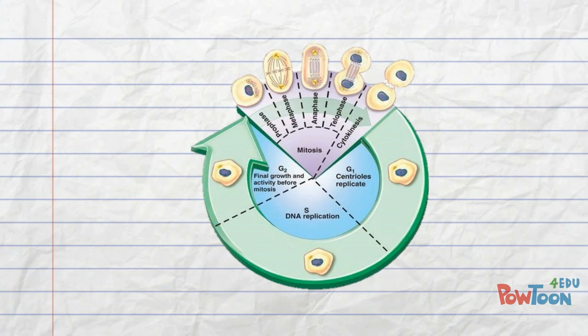Interphase itself is split into three different sections. There's a G1 phase where the cell is going to spend most of its life and it's going to do all its life processes like make proteins and taking water through osmosis.